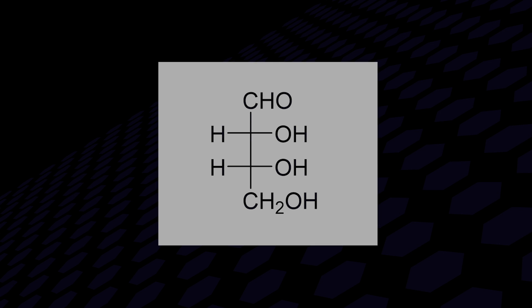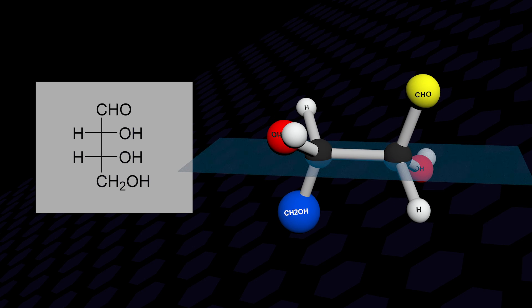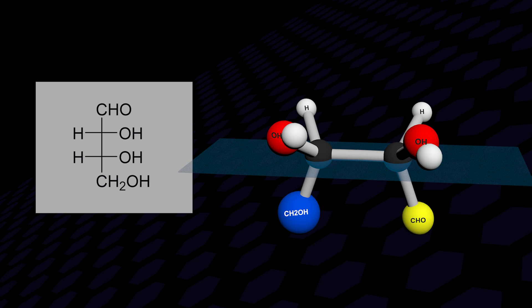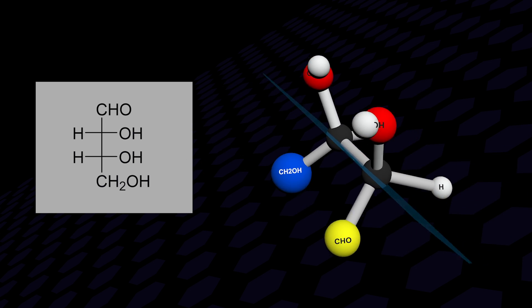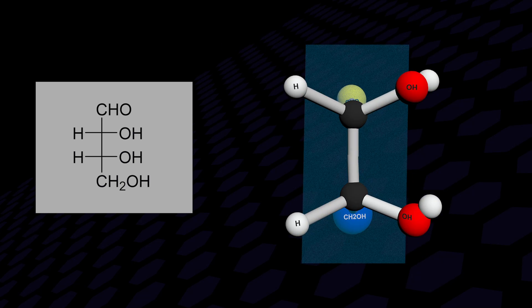To return to the Fischer projection, rotate the molecule to place the carbonyl group closest to the top, and rotate the central bond so that both top and bottom bonds are facing backwards, and the horizontal bonds are facing forwards.